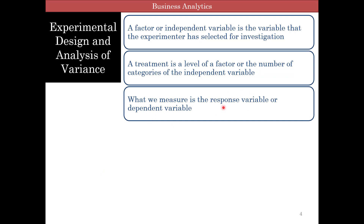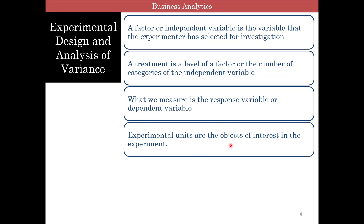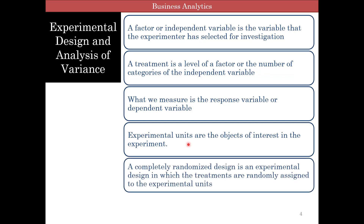What we measure — maybe the number of units you produce using an assembly method — is the response variable or dependent variable. What we are saying is that the type of assembly method affects this dependent variable. Experimental units are objects of interest in the experiment, and this is where we assign workers randomly. Assuming we have 90 workers, all equally well trained in all three methods, we randomly assign 30 each to A, B, and C. That's a completely randomized design with only one factor: assembly type.